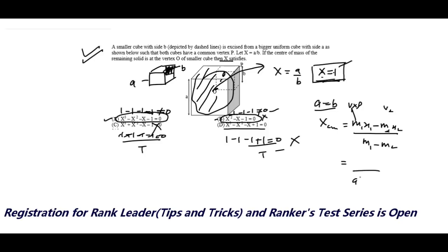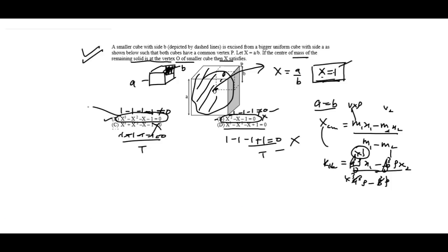We have a cube rho minus b cube rho for the mass. And here we have a cube rho x1 minus b cube rho x2 for position. We already have information that the center of mass of the remaining solid is at the vertex. If we divide by b, this becomes 1, this is x cube, this is x cube and this is 1. Our answer should come in x cube, so our answer has been automatically determined.